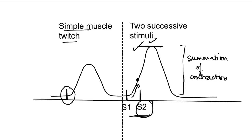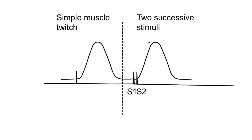Now if we give the second stimulus even earlier — maybe in the latent period itself right after the first stimulus — what will be the response? We see that there is no effect of the second stimulus; we get only a single simple muscle twitch with the same height as that obtained by a single stimulus.